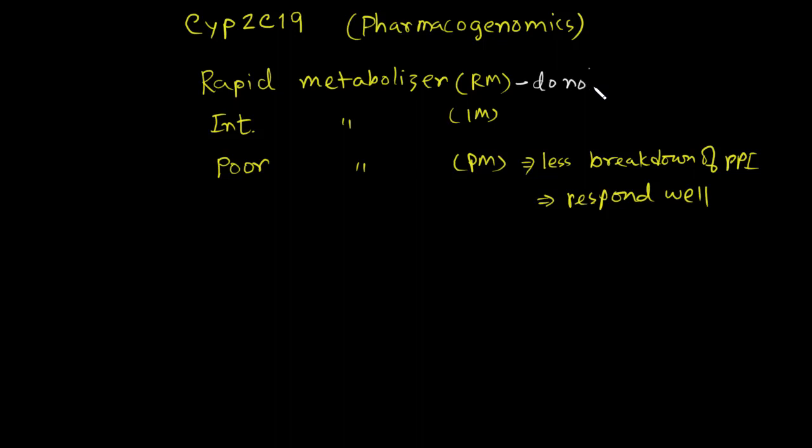On the other hand, the rapid metabolizers do not respond well to PPI therapy. In those populations higher doses of the drug may be needed. Genotyping test for cytochrome P450 2C19 polymorphism is commercially available, but currently genotyping is not a requirement to initiate the therapy. With this we end our discussion about PPI pharmacology.